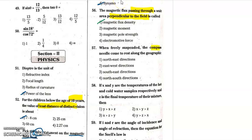Question 57: when a freely suspended compass needle comes to rest along the geographic direction — the compass, when freely suspended, aligns in a north-south direction. So question 57, the fourth option is the correct answer; it does not point south direction only.